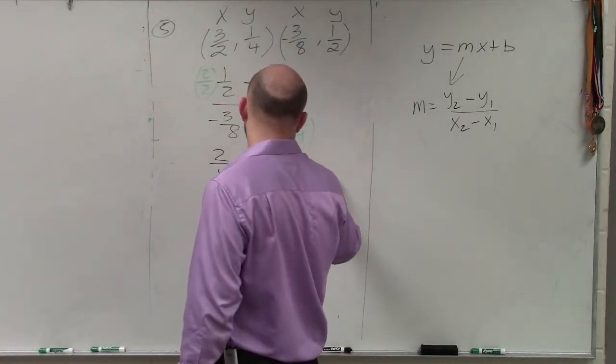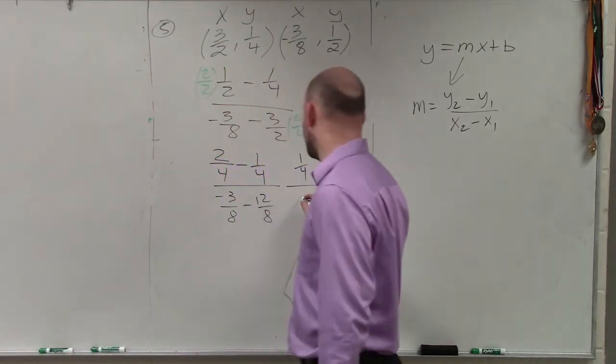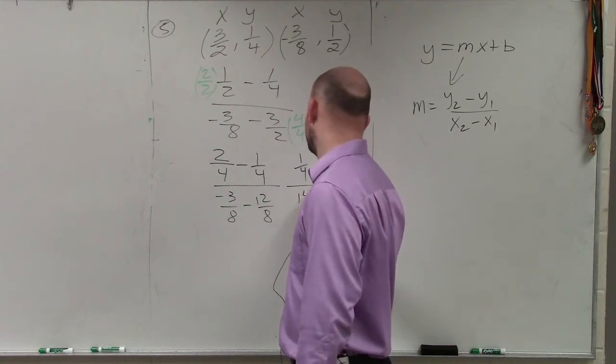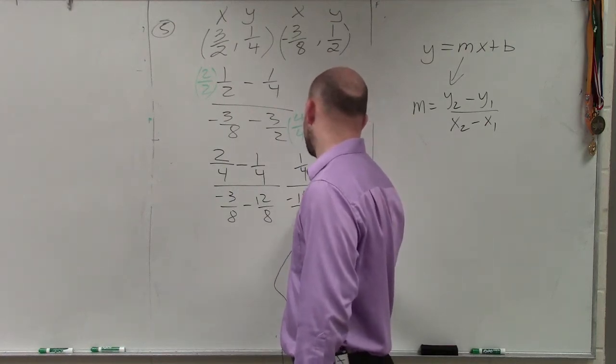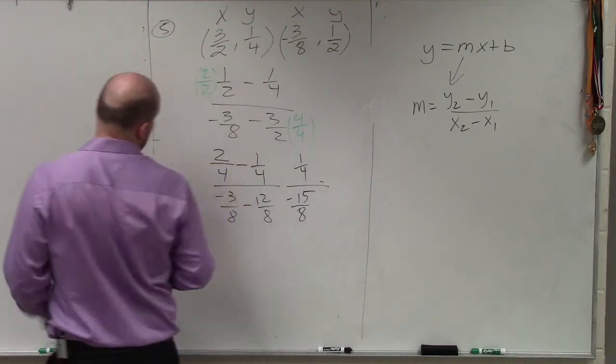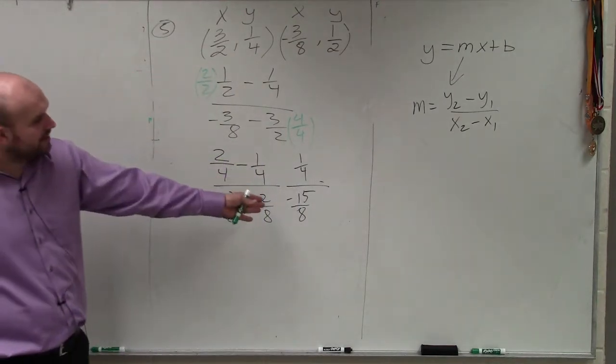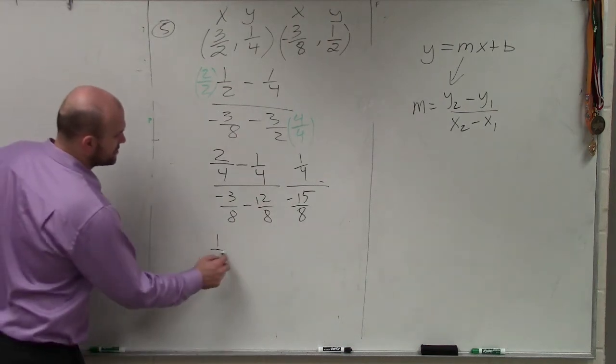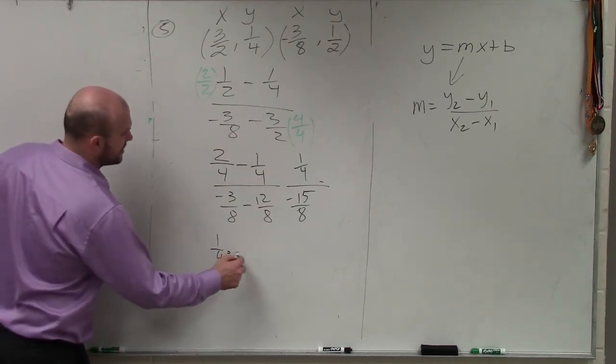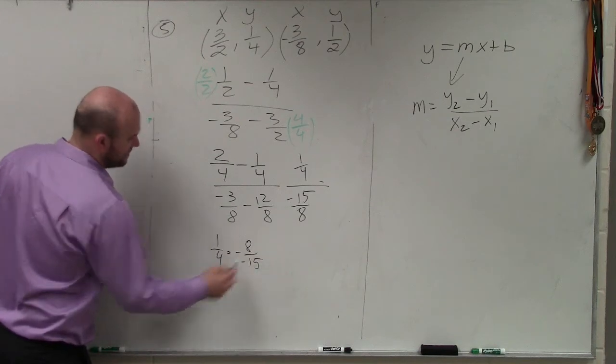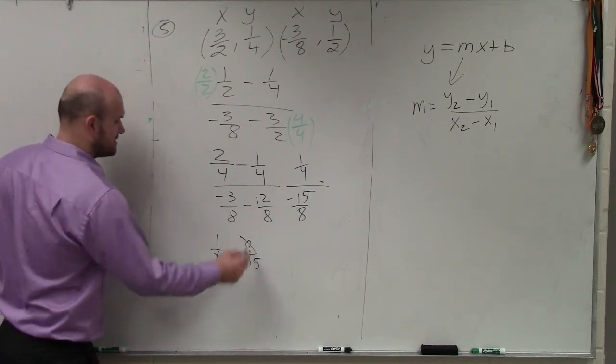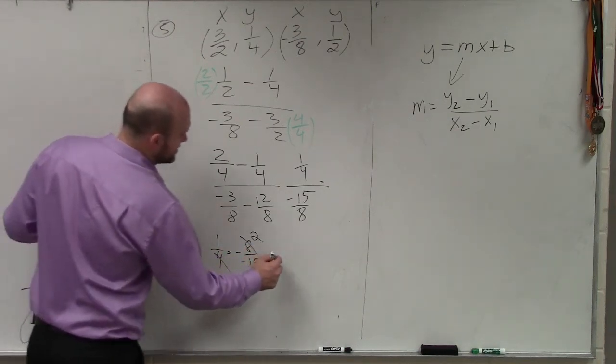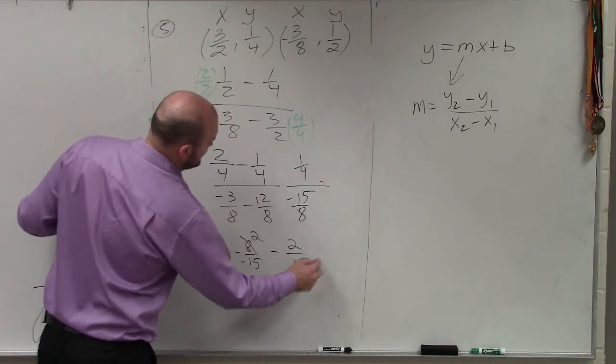This becomes 1 fourths divided by negative 15 eighths. And just as we mentioned, ladies and gentlemen, we want to multiply by the reciprocal. So I say 1 fourth times negative 8 over negative 15. I can simplify that to give me 2. So that gives me a negative 2 fifteenths.